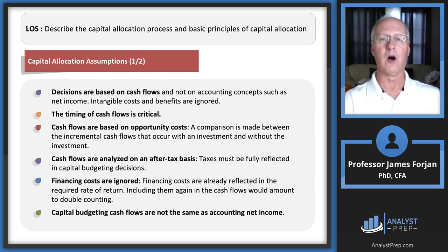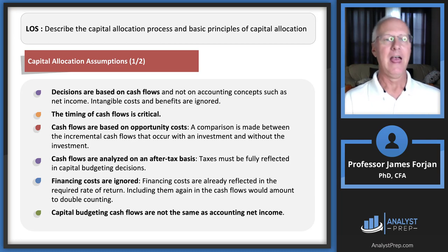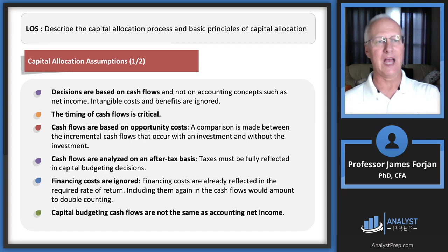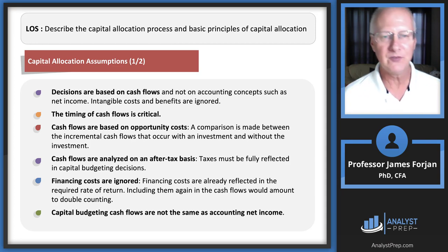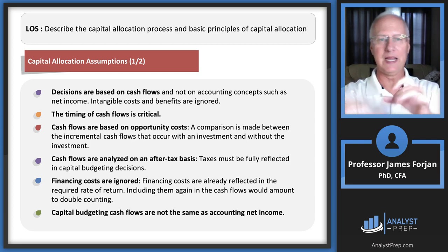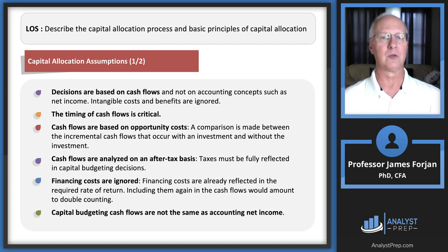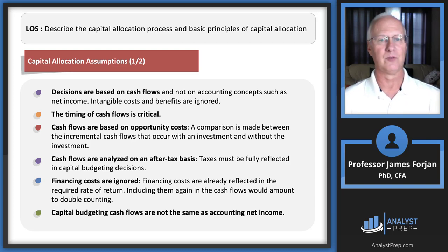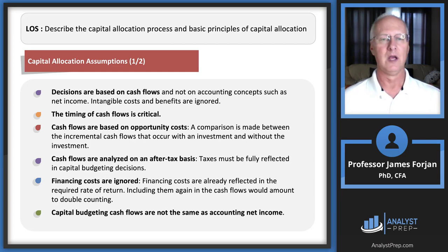The reason decisions are based on cash flows is that in any introductory finance textbook, there's a sentence that says 'cash is king.' Accountants can come up with a net income and can massage the data to make the company look better than it actually does. Cash flows are less able to be manipulated. Timing of cash flows is also critical — decisions are based on both the amounts and the timing of those cash flows.